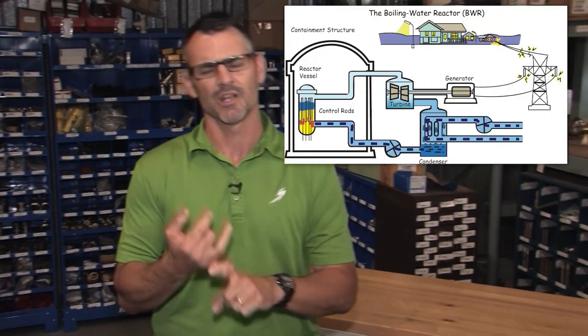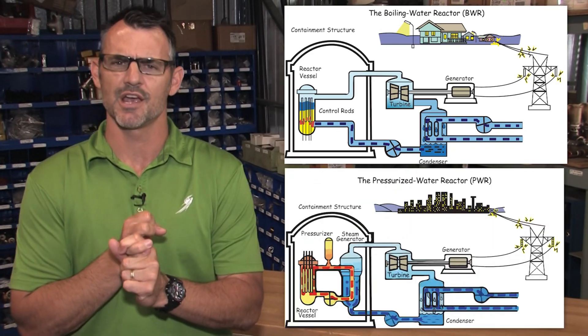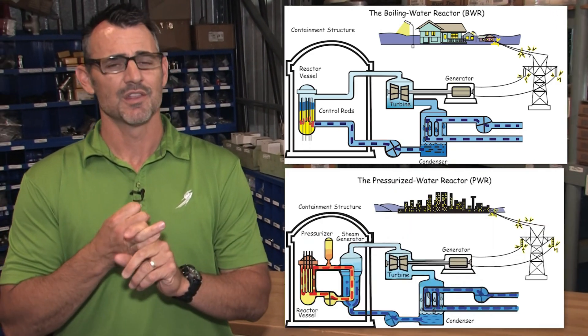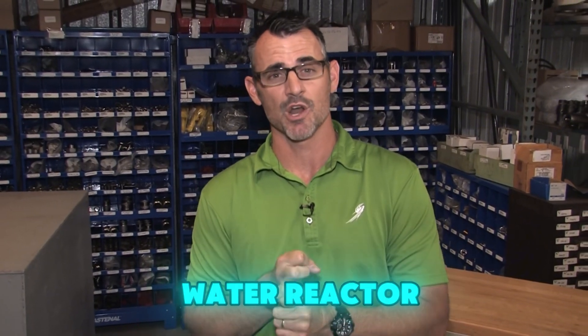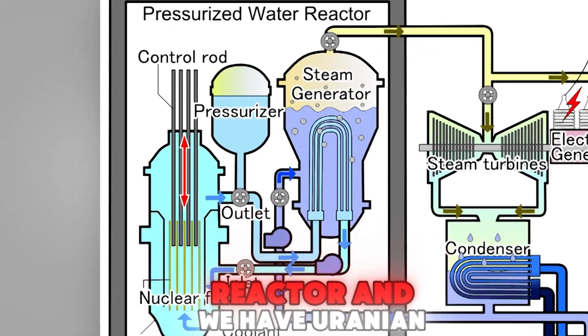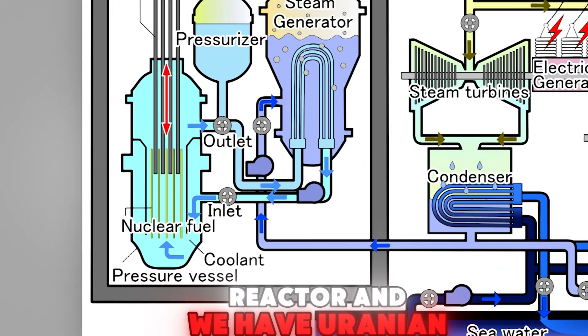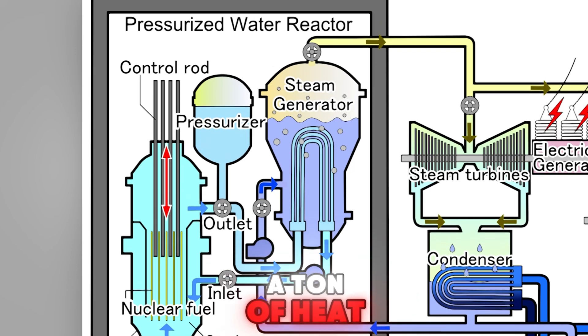Now the difference between land and submarine nuclear is more similar than you think. Last week we talked about the boiling water reactor and the pressurized water reactor. Well, the propulsion system in a submarine is a pressurized water reactor. And just to refresh — you have a nuclear reactor with Uranium-235 being split, creating a ton of heat energy.